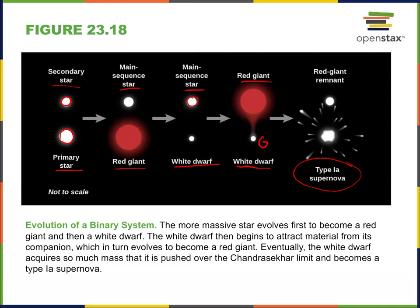The white dwarf pulls matter off of the red giant. When that happens, it can pull so much matter onto it that it reaches the critical point of having a mass of 1.4 solar masses, thus overcoming electron degeneracy. As it starts pulling in matter due to gravity, it will then create a collapse — and then you will have a Type I supernova. Type I supernovas are not the death of high-mass stars — those are Type II. Type I supernovas, which are less bright but more common, are discovered first — hence the name Type I. Type II are the more dramatic, brighter ones. Type I supernovas are created by these hungry white dwarfs — they are the death of the white dwarf.